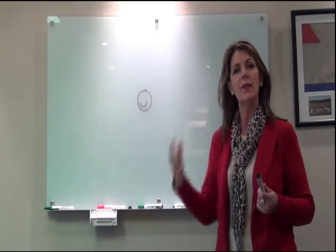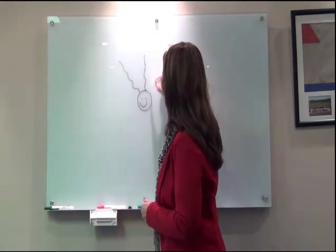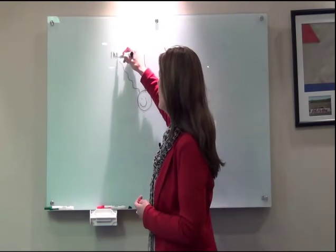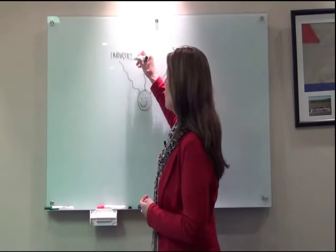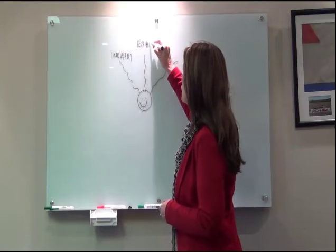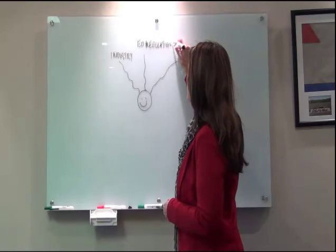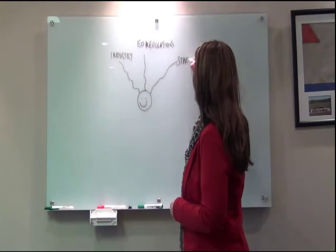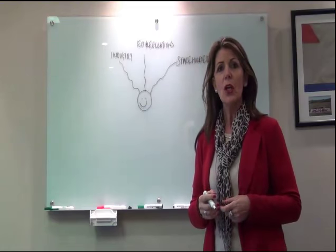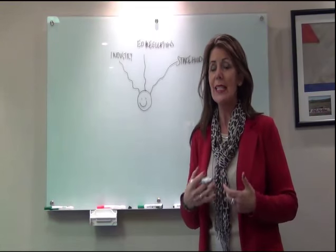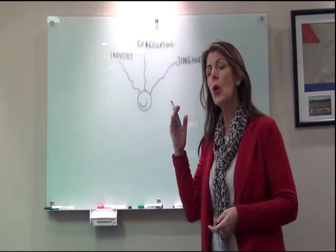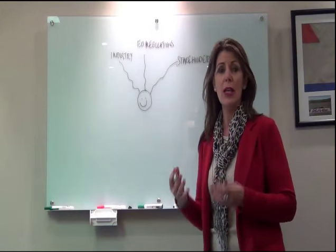We start by looking at the environment — the external factors that impact on the industry and in turn on agents. This covers the relevant bodies, the most important of which is the EAB, looking at the education regulations and the various stakeholders involved. As a new recruit, you are coming into an environment that already exists and has a bearing on your choices, your career, and your future within the industry, both legally and educationally.